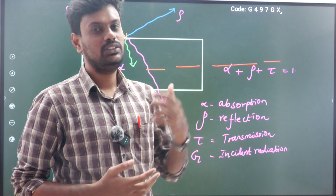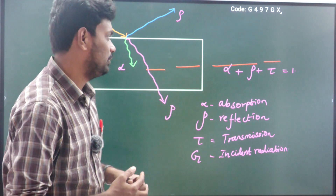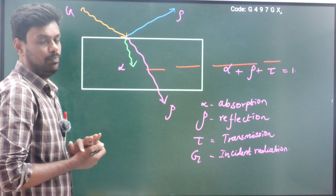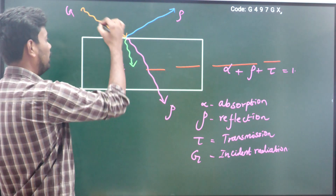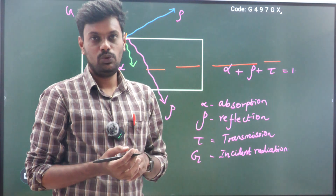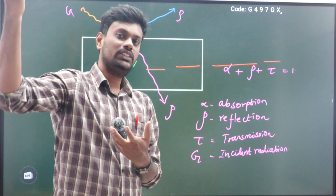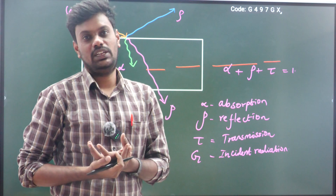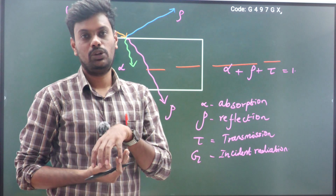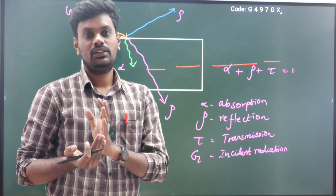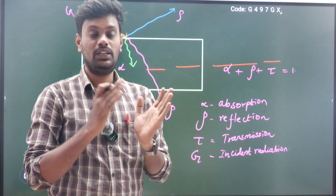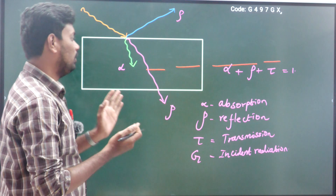This concept is most important while solving numericals as well, so listen carefully. Consider one solid body — some radiation is coming and falling on this body. When radiation falls on a solid body, it will absorb some amount of energy, reflect some amount of energy, and transmit some amount of energy. So when any kind of energy falls on a body, some portion is reflected, some portion is absorbed, and some portion is transmitted from one end to another.